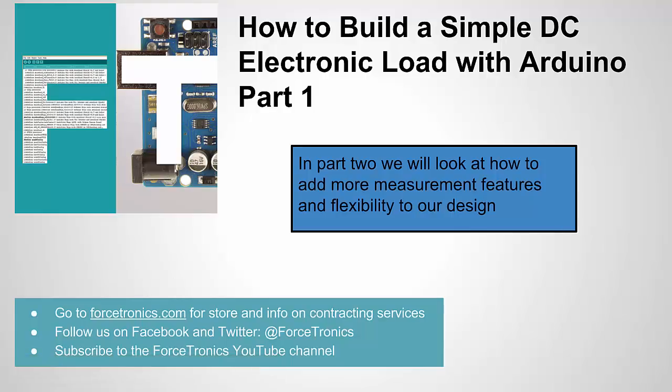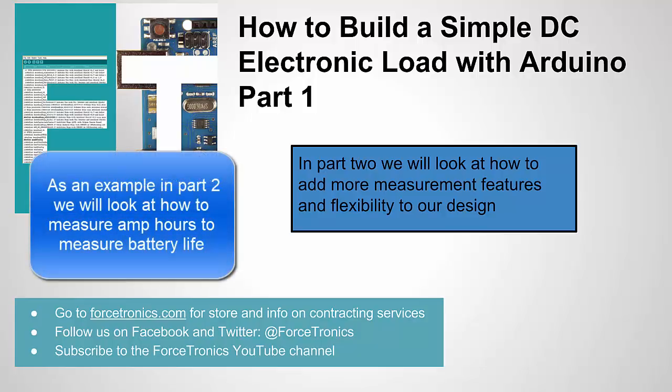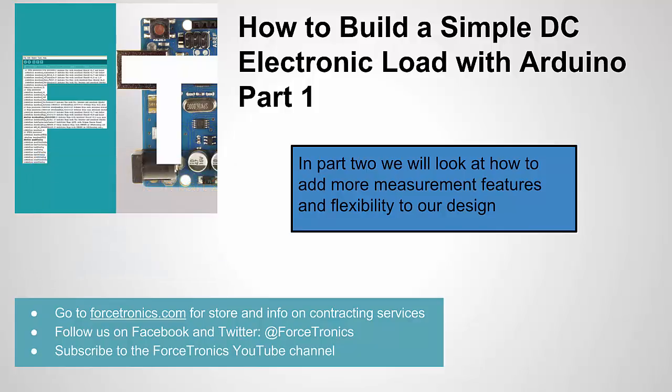Okay that's going to be it for part 1 on how to build a simple DC electronic load with Arduino. In part 2 we're going to look at doing a little more advanced measurements so we know some of the values as they happen dynamically. We were a little off on some of the currents and we're going to look at how to compensate for those little errors. If you have anything to add or any questions use the comment section below. Thank you for watching and I'll see you back for part 2.